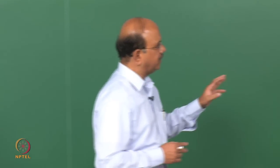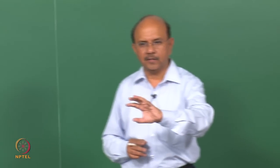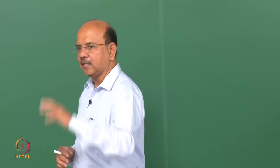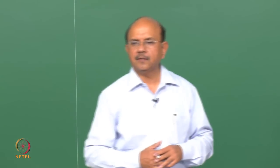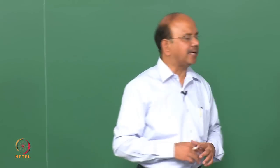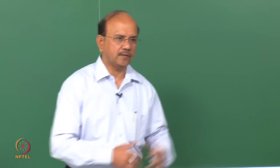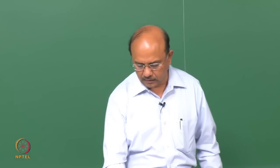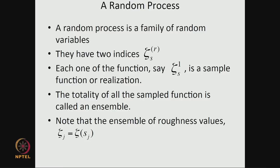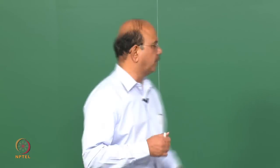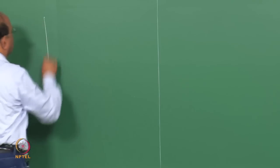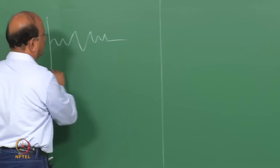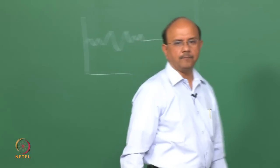There is an event, there is a mapping to the real line which is called a random variable, and the map from this random variable to a probability measure can be done, or we can directly give this probability measure to the event. The random process is a family of random variables. We did this in the case of the roughness of the road as a random variable.